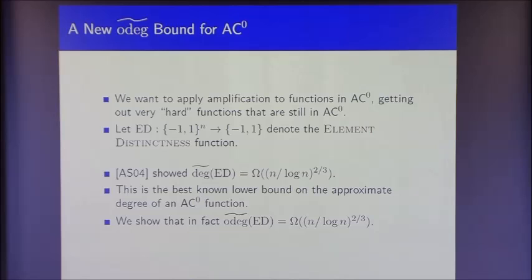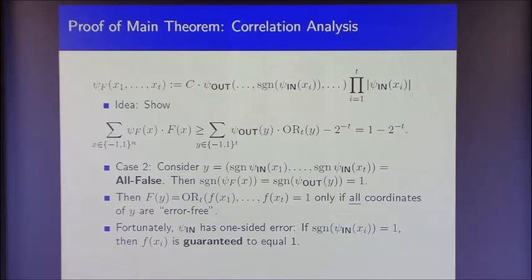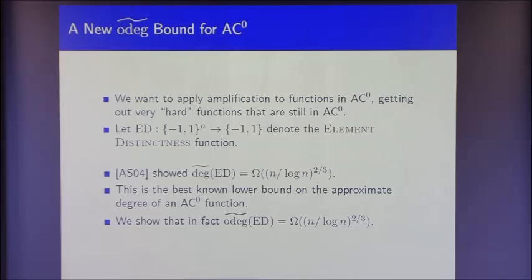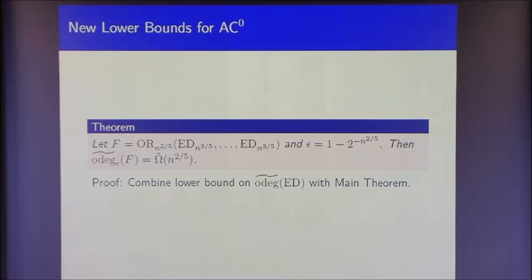By combining our hardness amplification result with our one-sided approximate degree lower bound for element distinctness, we achieve a function in AC0 with one-sided approximate degree n^{2/5}, even allowing error 1 - 2^{-n^{2/5}}. Element distinctness is computed by a depth-2 CNF, so OR of copies of element distinctness is computed by a depth-3 circuit.